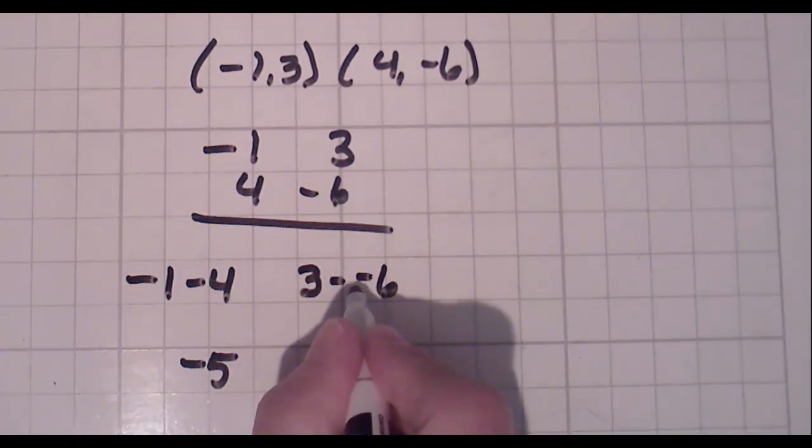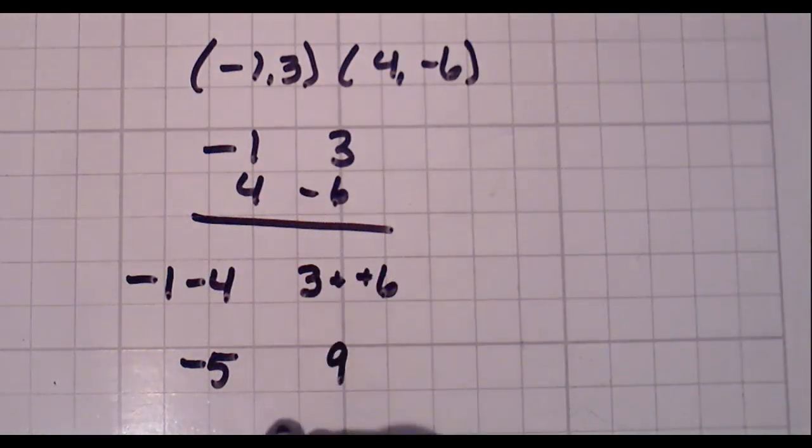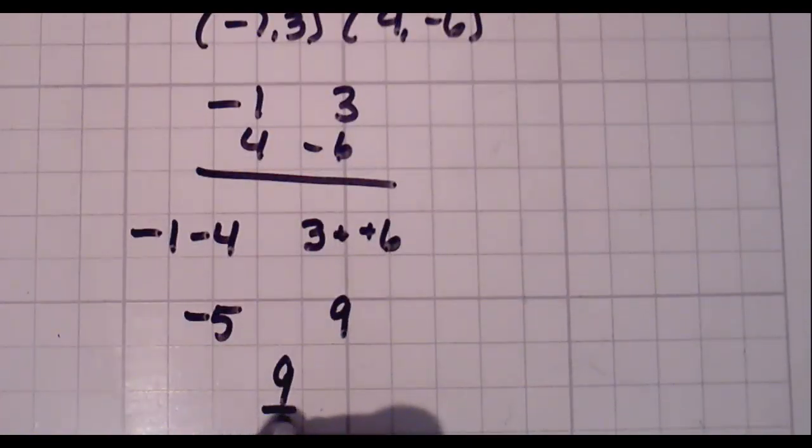Top number minus bottom number. And if you see, I'm subtracting a negative number, which is the same thing as adding a positive number. So our answer is 9 fifths. Sorry, negative 9 fifths. Because you have your negative sign right there. So watch your signs.